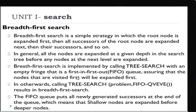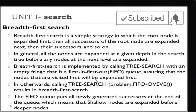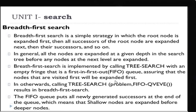In BFS, a queue is used for implementation. The first node visited is put inside the queue — that is the enqueue operation. Then the dequeue operation is performed: the node is dequeued, its successors are found, and those successors are enqueued. Then the next node is dequeued and its successors are found. Like that, you expand the entire tree.